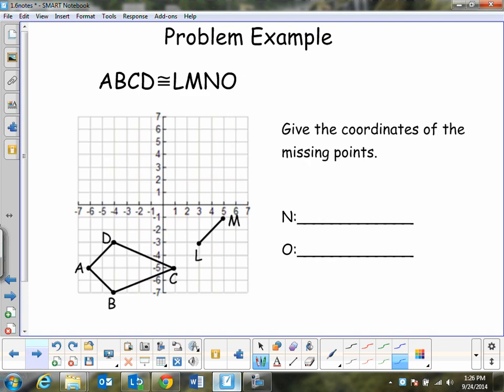Last one. ABCD is congruent to LMNO. So M and O are missing. So the one thing that you want to do to figure these out is count the vertical and horizontal distance here. So L going with A, M going with B, and so C corresponds to N.